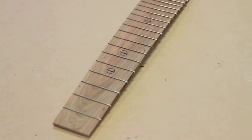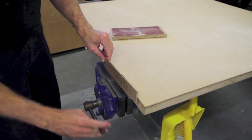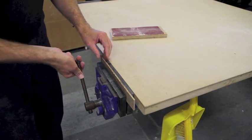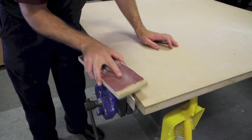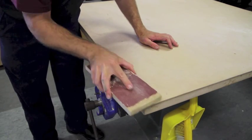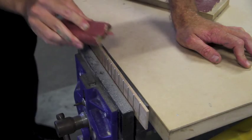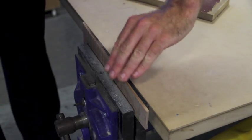The final step before attaching the fretboard to the neck is to clean up the overhanging fret wire. A straight sanding block will do quite a good job. You can also use a file. With the sanding block on an angle you can make a nice chamfer on the fret wire.